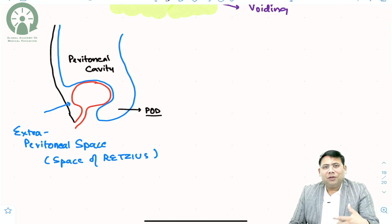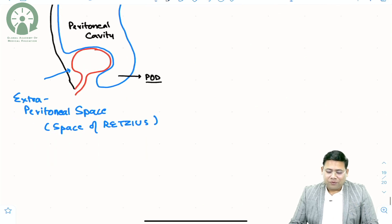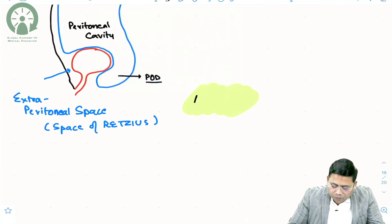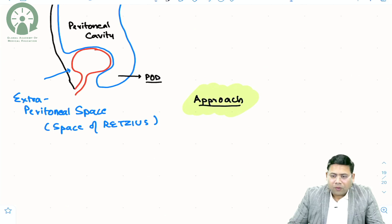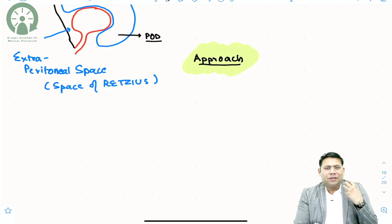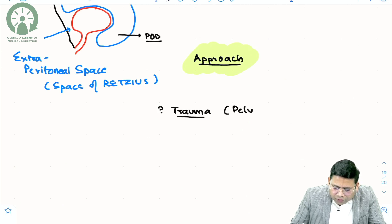Now let us look at the approach to bladder injury. How do you think there could be a bladder injury in a patient? You have a patient with trauma, specifically pelvic injury. Following that there is anuria — the urine is not coming out.